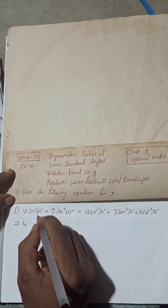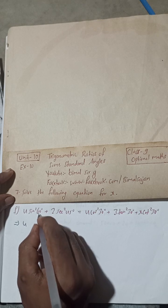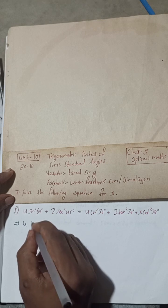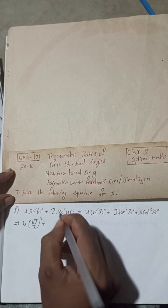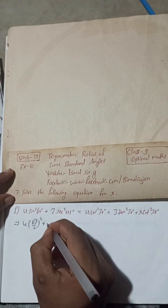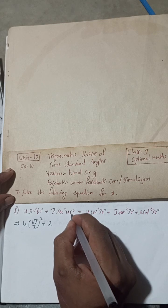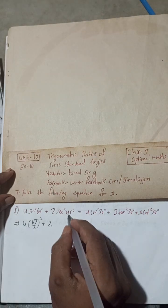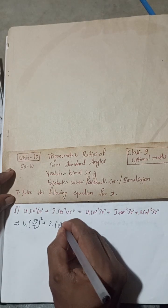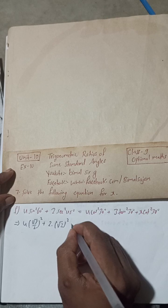sin²60°, so sin 60 value is √3/2, but there is square, so this is (√3/2)² plus 2 sec²45°. Sec 45, cos 45 is 1/√2, so sec 45 is √2, and there is square, so (√2)² equals...